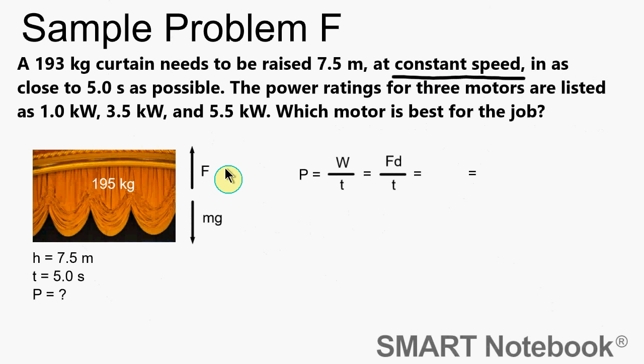Well if it's moving at a constant speed there's no acceleration, so the sum of the forces in the y direction is going to equal zero, so F has to equal mg. So we can replace F with mg. So mg times the distance divided by the time equals power. So I need to solve for power. I know the mass, I know g, I know the distance, I know the time because I'm saying I want it up in five seconds, so now we just plug and chug.